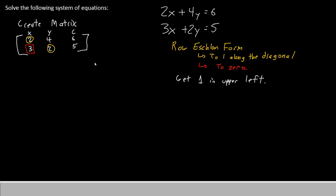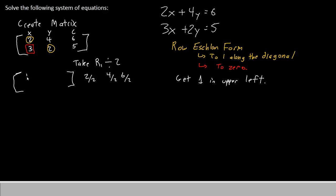The first thing we'll do to get row echelon form is to start in the upper left and get a 1 there first. To accomplish this, our first step will be to simply divide everything in row 1 by 2. So if my row 1 begins as 2, 4, 6, I'll divide each number by 2: 2 divided by 2 is 1, 4 divided by 2 is 2, and 6 divided by 2 is 3. The second row does not change — it is still 3, 2, 5.